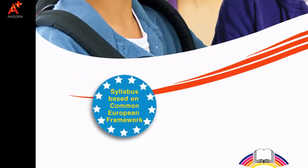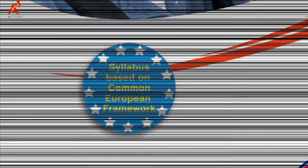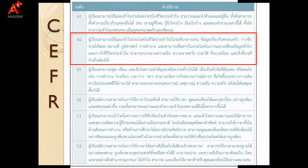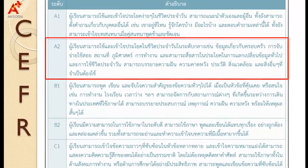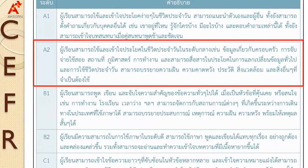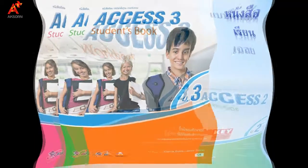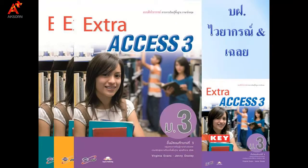เนื่องจากสื่อชุด Access ชั้นมัธยมปีที่ 1-3 มาจากสำนักพิมพ์ที่อยู่ในประเทศสหภาพยุโรป สื่อชุดนี้จึงได้รับการออกแบบการเรียนการสอนตามกรอบมาตรฐานความสามารถทางภาษาอังกฤษหรือ CEFR ดังนั้นเมื่อเรียนจบชั้นมัธยมปีที่ 3 แล้ว นักเรียนจะมีระดับความสามารถทางภาษาในระดับ A2 ซึ่งเป็นไปตามระดับที่กระทรวงศึกษาธิการกำหนด สื่อชุด Access ประกอบไปด้วย หนังสือเรียน แบบฝึกหัดพร้อมเฉลย และแบบฝึกไวยากรณ์ Extra Access พร้อมเฉลย